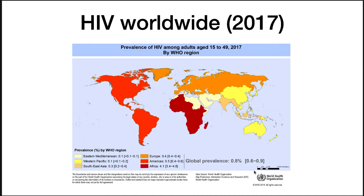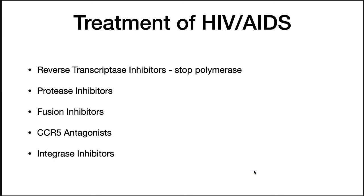HIV is distributed worldwide, with some of the most serious cases occurring in sub-Saharan Africa. A wide arsenal of drugs has been developed to combat HIV, including reverse transcriptase inhibitors that stop the polymerase, protease inhibitors that stop HIV proteases, fusion inhibitors that prevent viral entry into the cell, and CCR5 antagonists that interfere with attachment by blocking the co-receptor from binding.